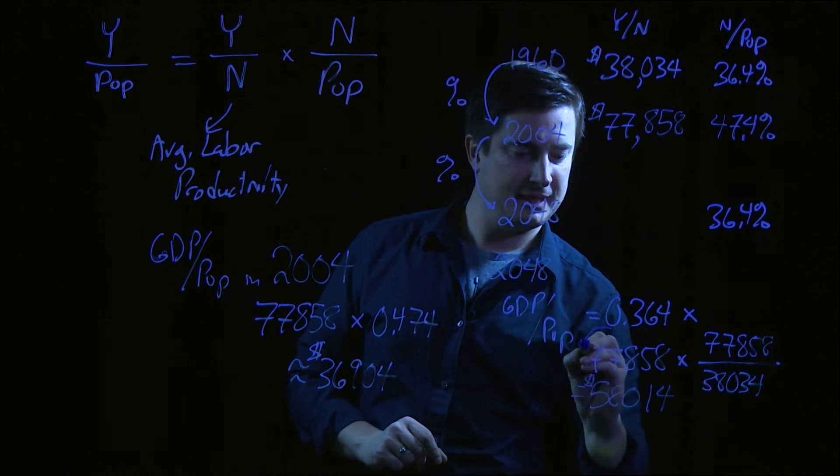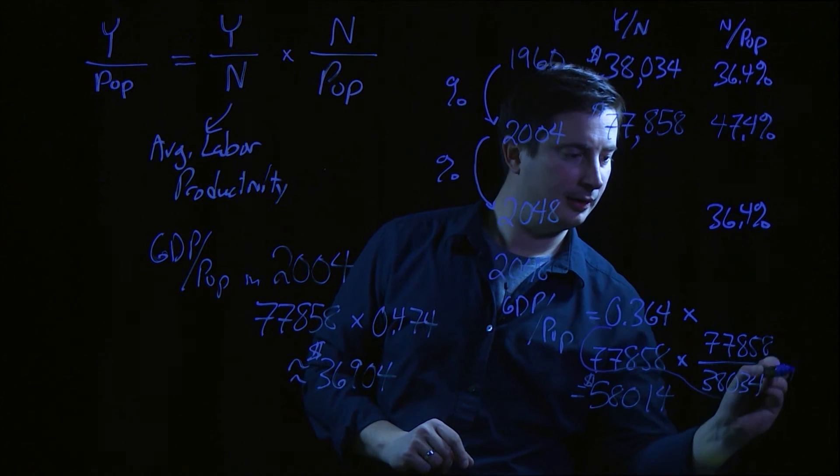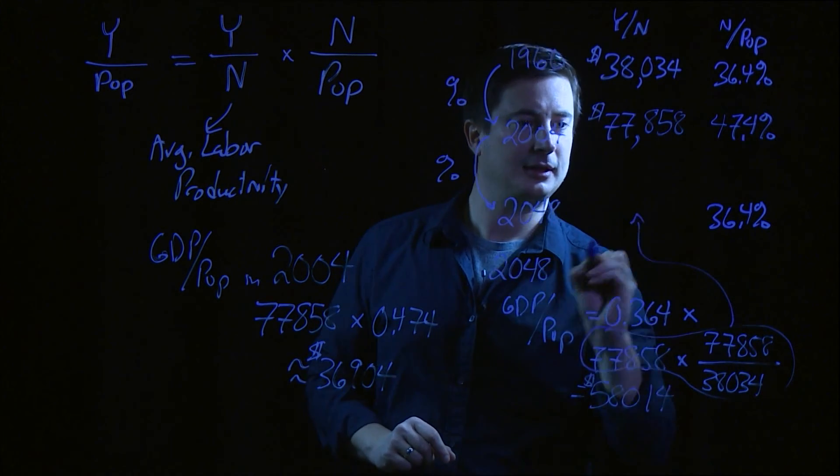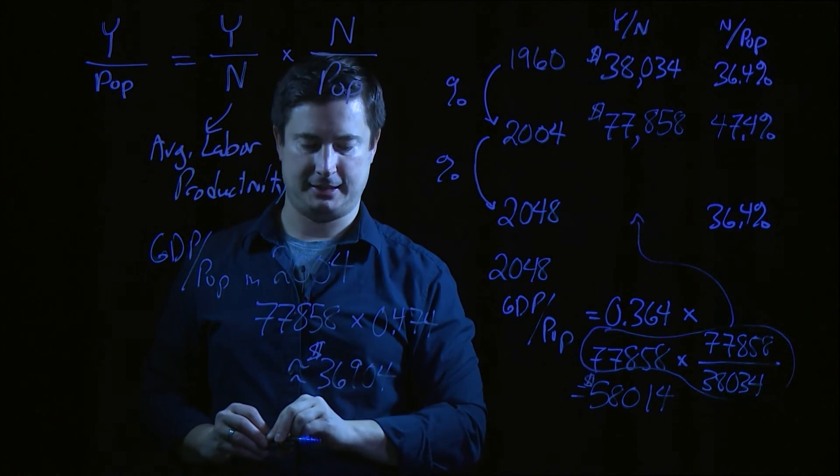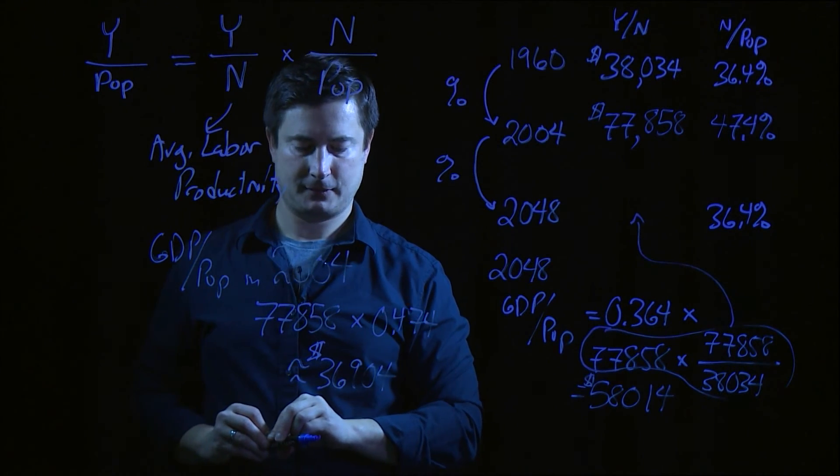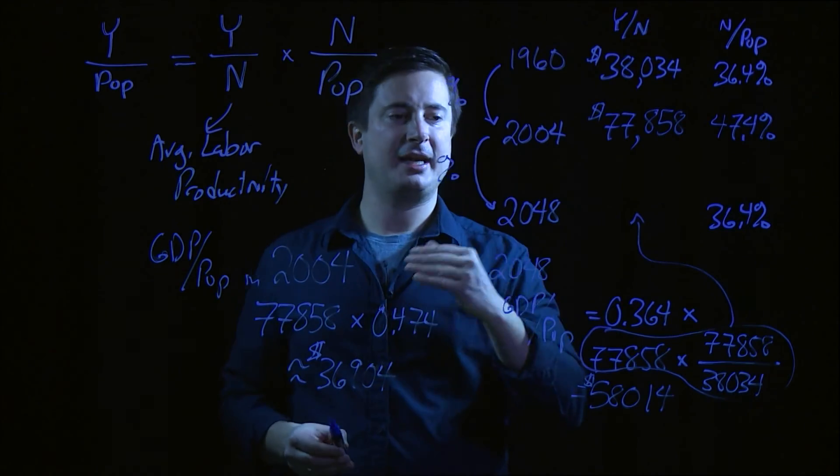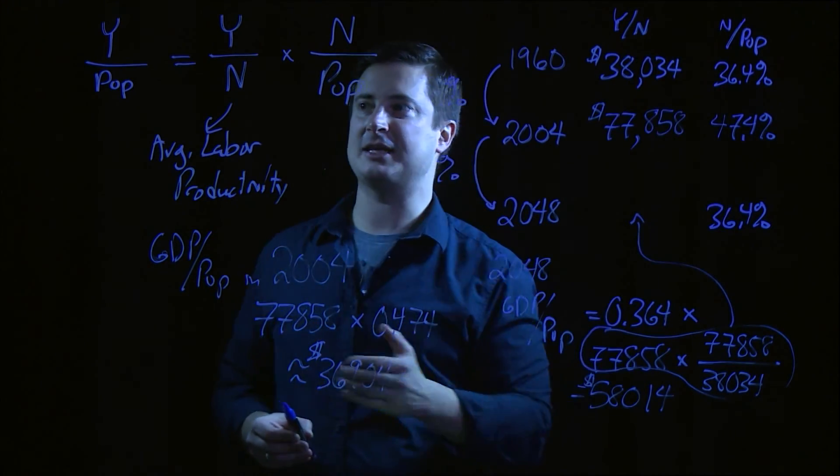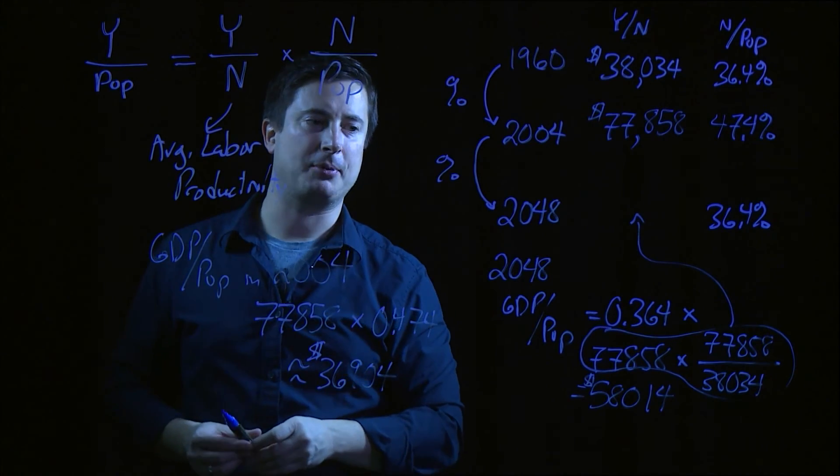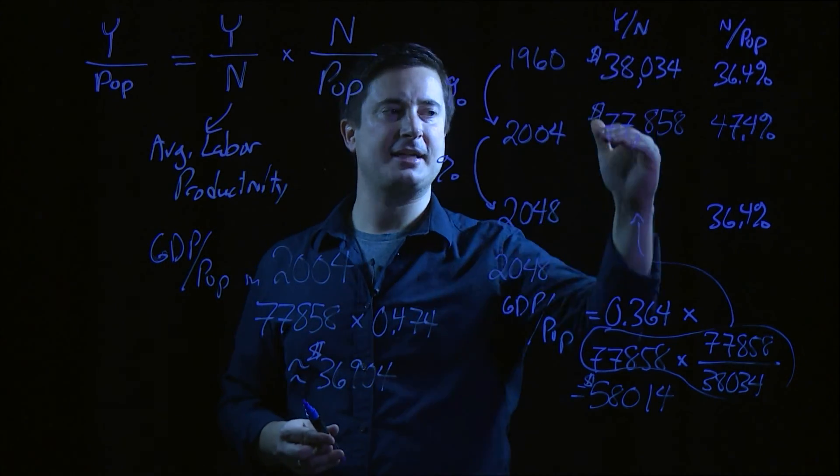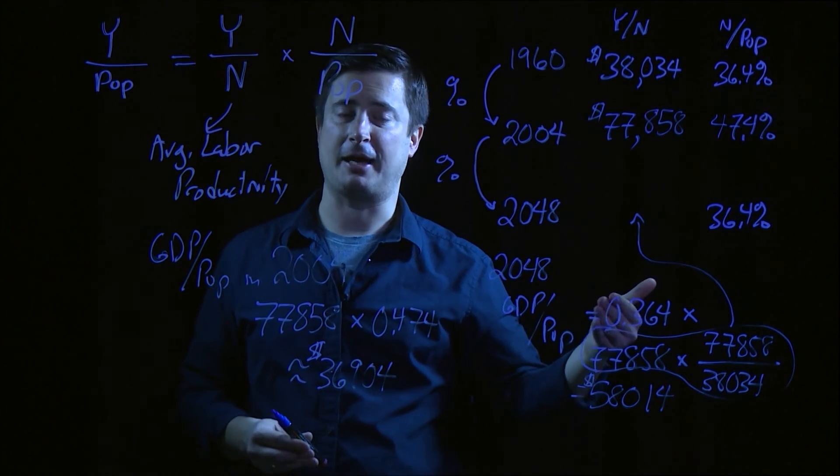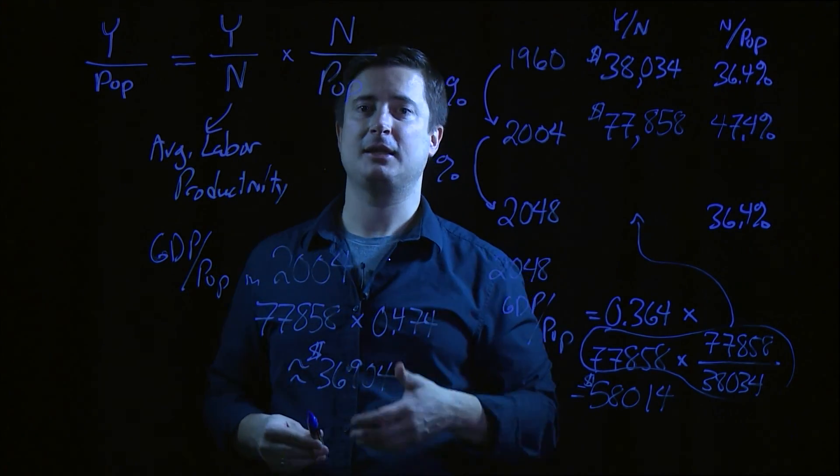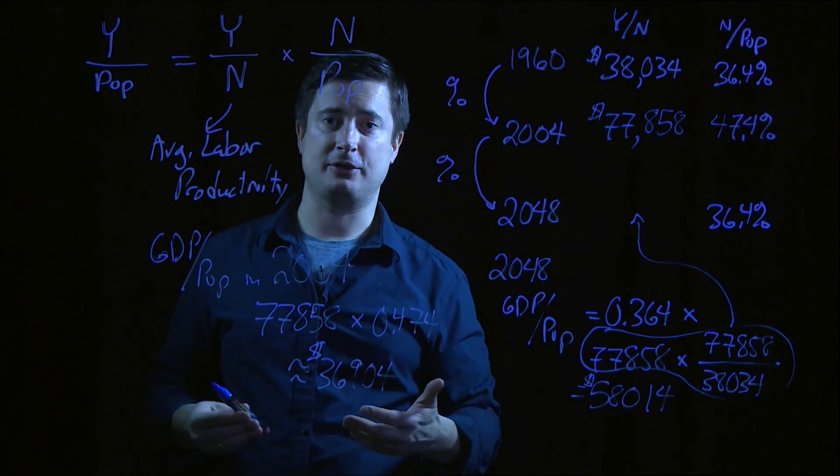So again, this piece right here is giving us labor productivity in 2048. So when we think about the graying of America, it's not that the fall of labor productivity is going to decimate GDP per capita as long as productivity continues to rise over time. And as we discuss in class, there's a number of reasons to think labor productivity will continue to rise.